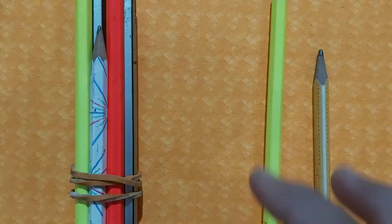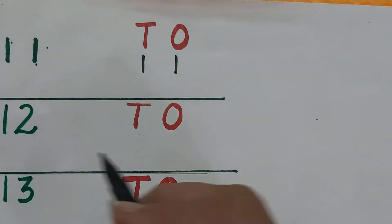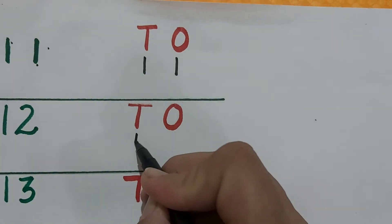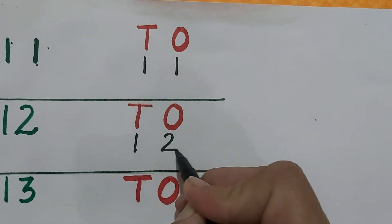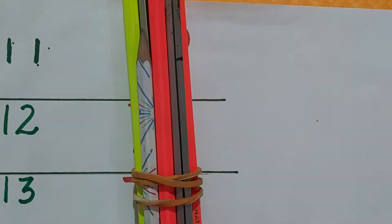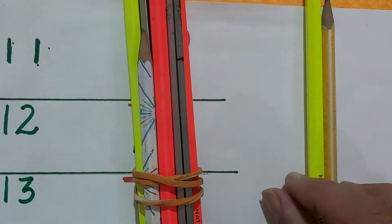How do we write this 12? We write like this — 1 ten and 2 ones.